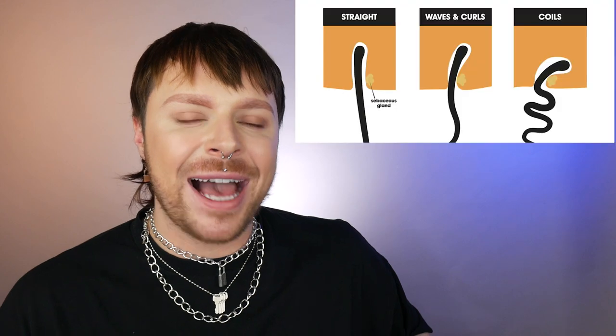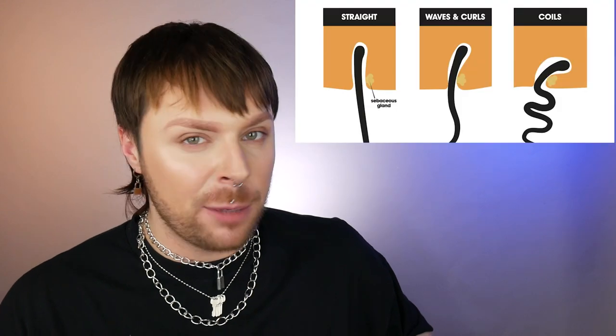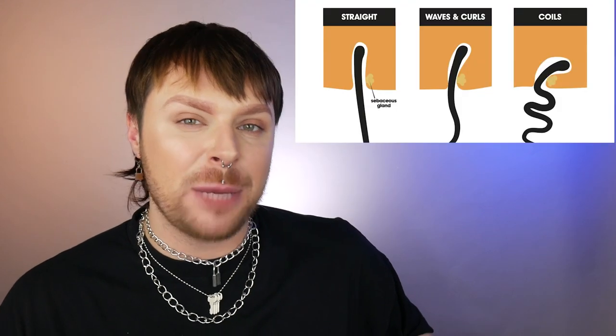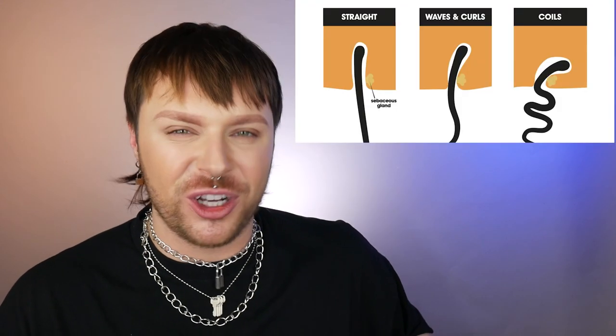First of all, all hair types have the same internal structure of the hair. The cuticle and the cortex are exactly the same no matter what the hair type is. The hair type of our hair is determined by the angle of the hair bulb and the shape of the follicle.